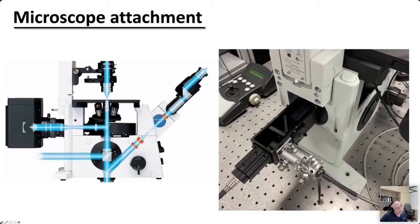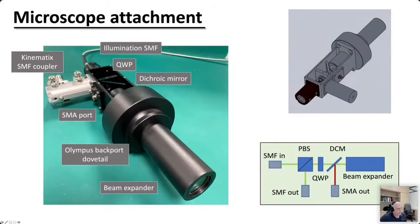What we do is stick our designed attachment to the back of the microscope, using the port which is normally there for camera coordination. The light is launched from a single mode fiber. You'll notice this picture was taken before the optical components are in, so there is a beam splitter missing at the moment. This one here is a kinematic Kineflex fiber coupler which acts as a single mode fiber with a pinhole.